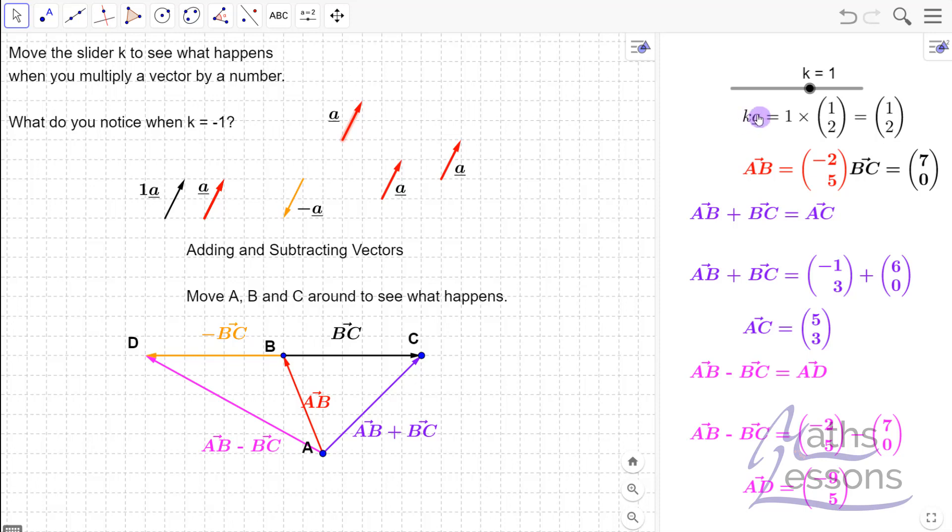And what we're going to do here is look at what happens when we multiply a vector by a number. So at the moment k equals 1. If I move it, nothing much is happening and our vector is (1, 2)—1 in the x direction, 2 in the y direction.